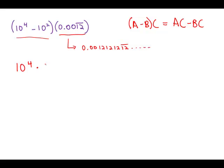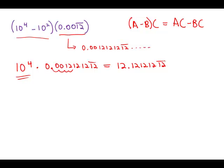10 to the fourth times the decimal — I'll write out the first little bit here: 0.121212... that whole thing repeating. Well, multiplying anything times 10 to the fourth just has the effect of moving the decimal place four places to the right. So in other words, that would be 12.121212..., going on forever.